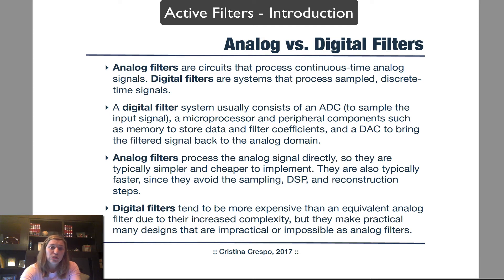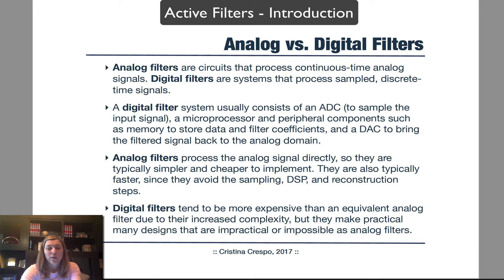A digital filter is more complex in nature than an analog filter, because since the signals in the real world are analog signals, for them to be processed digitally you first have to digitize them. A digital filter system usually includes an analog-to-digital converter to sample and digitize the input signal, a microprocessor and peripheral components to store data and filter coefficients and perform the filtering operation, and then a digital-to-analog converter to bring the filtered signal back into the analog domain. Analog filters process analog signals directly, meaning you don't have to include a data converter at either the input or output, and typically they are simpler than a microprocessor.